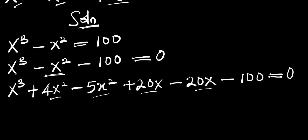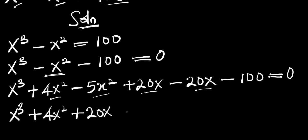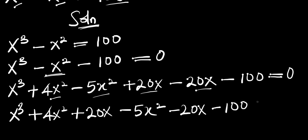Now the next thing is to rearrange this equation. We can have it as x³ plus 4x² plus 20x, then minus 5x² minus 20x minus 100, and this equals 0.